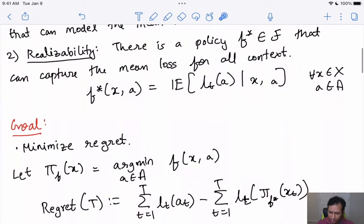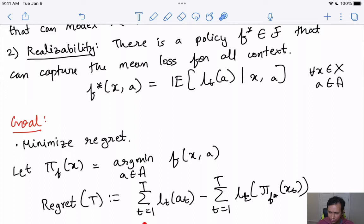As in any contextual bandit algorithm, the goal here is to minimize the regret. To define regret more formally, let's define π_f(x) to be the best action under policy f for context x. In particular, it's the minimum value f(x,a) for all actions a in A. Then regret is defined as the total loss accumulated by our online algorithm with that of the total loss accumulated by the best function class f* within this big set F.